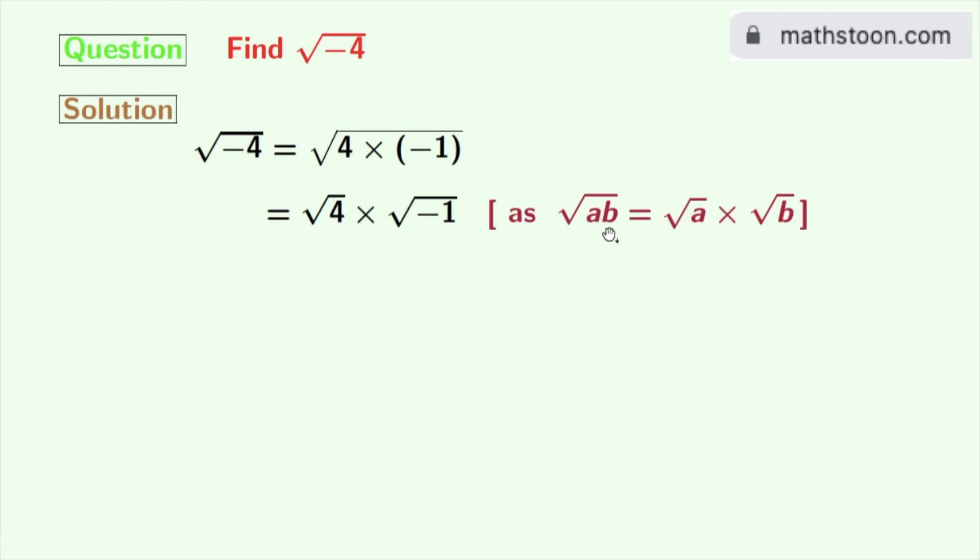As we know that square root of ab is equal to square root of a times square root of b. Here a is 4 and b is minus 1.